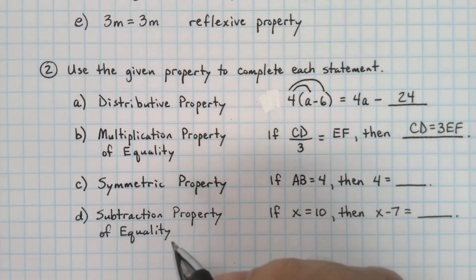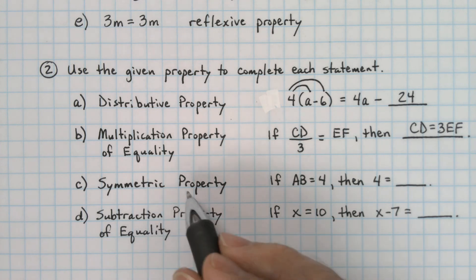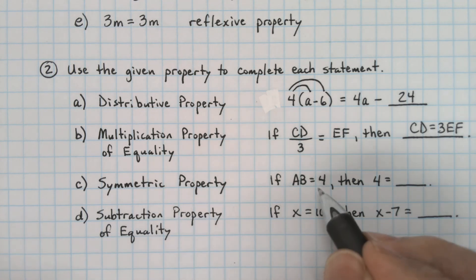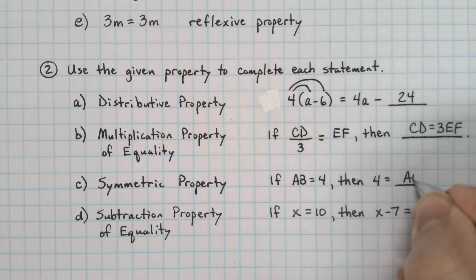Part C is the symmetric property. The symmetric property says that if two things are equal, it doesn't really matter which one goes first. So we could switch these two around and put AB here.